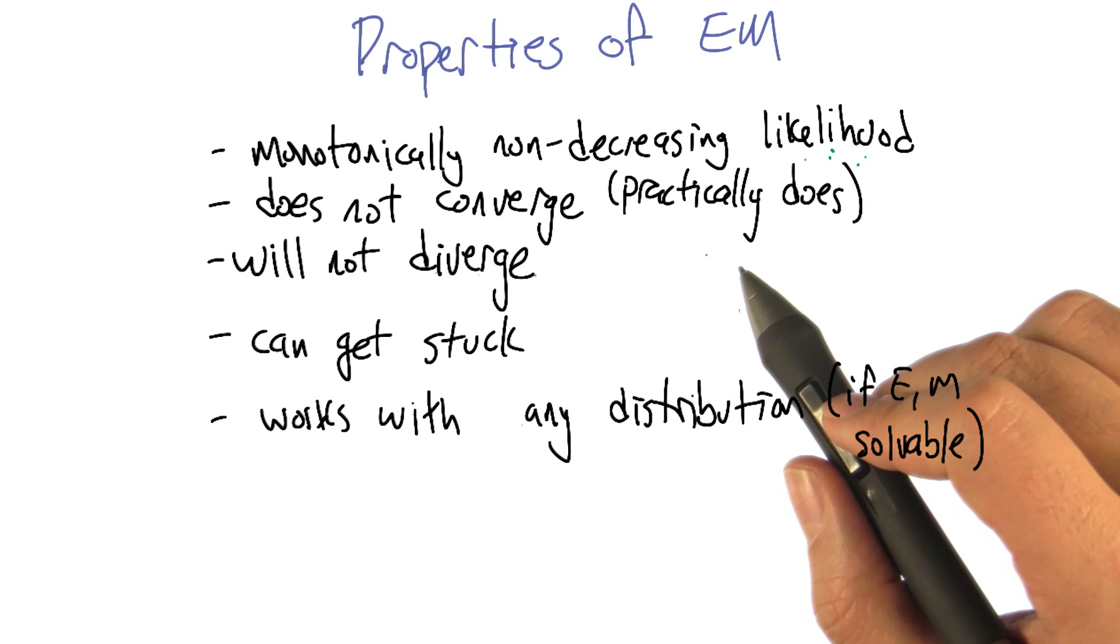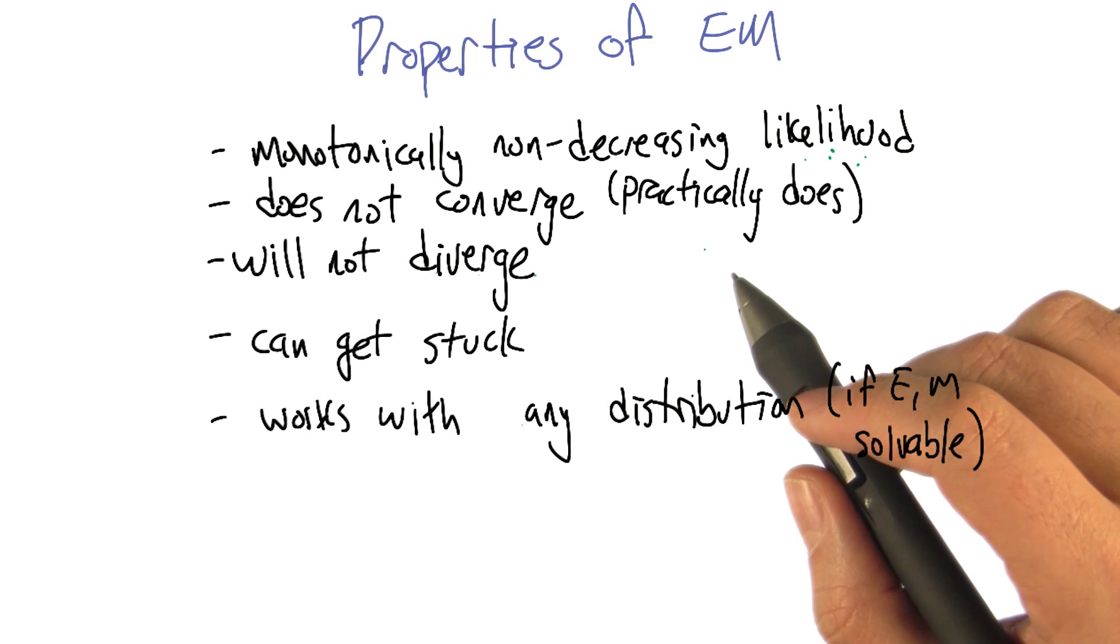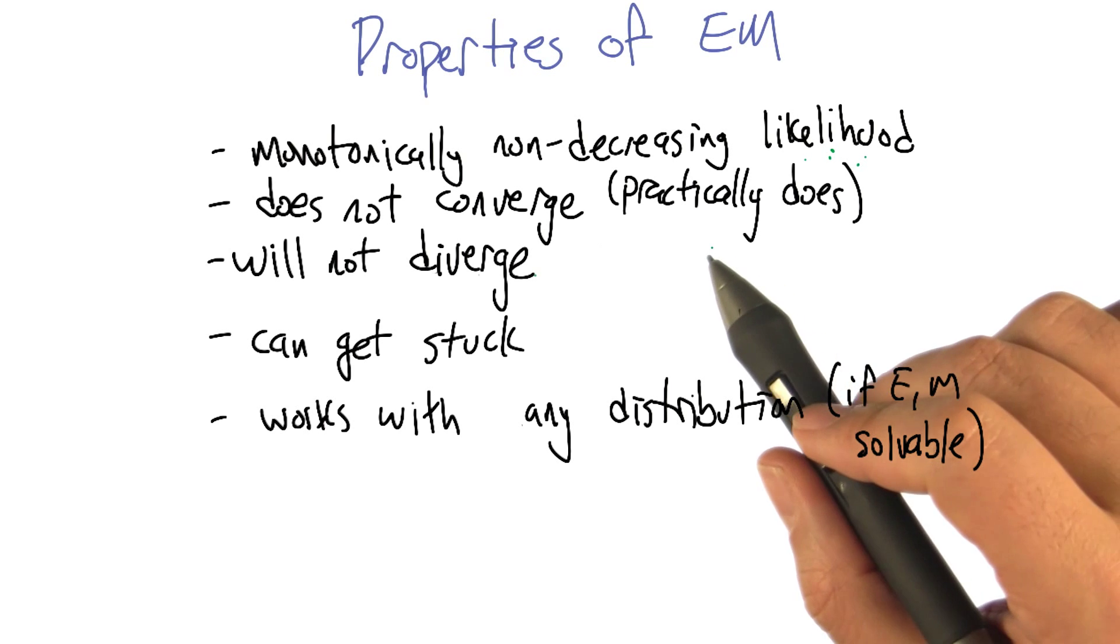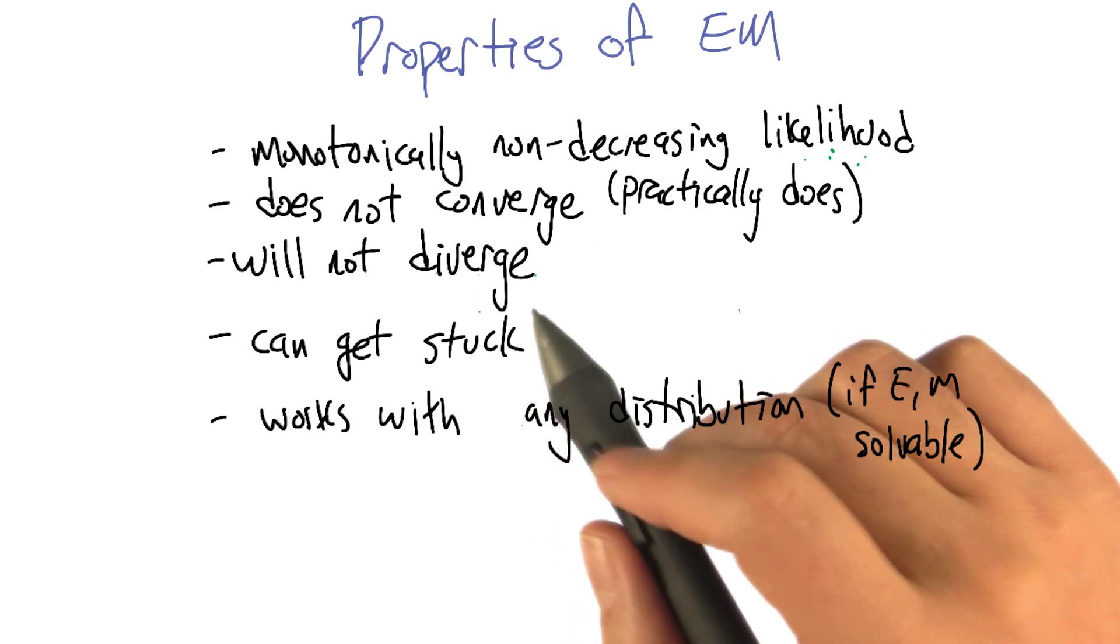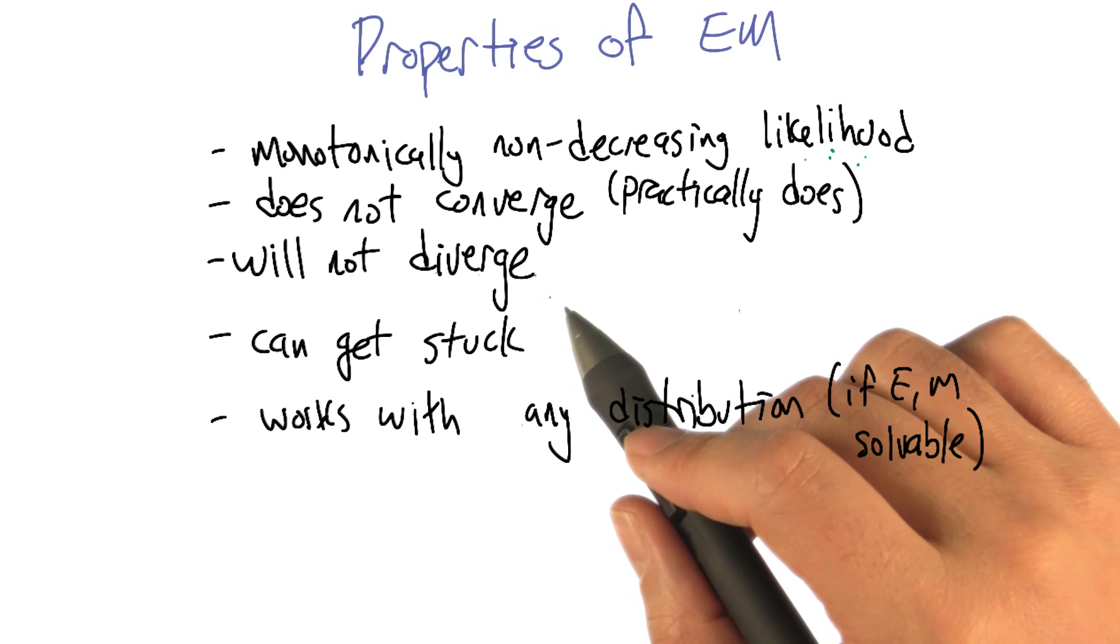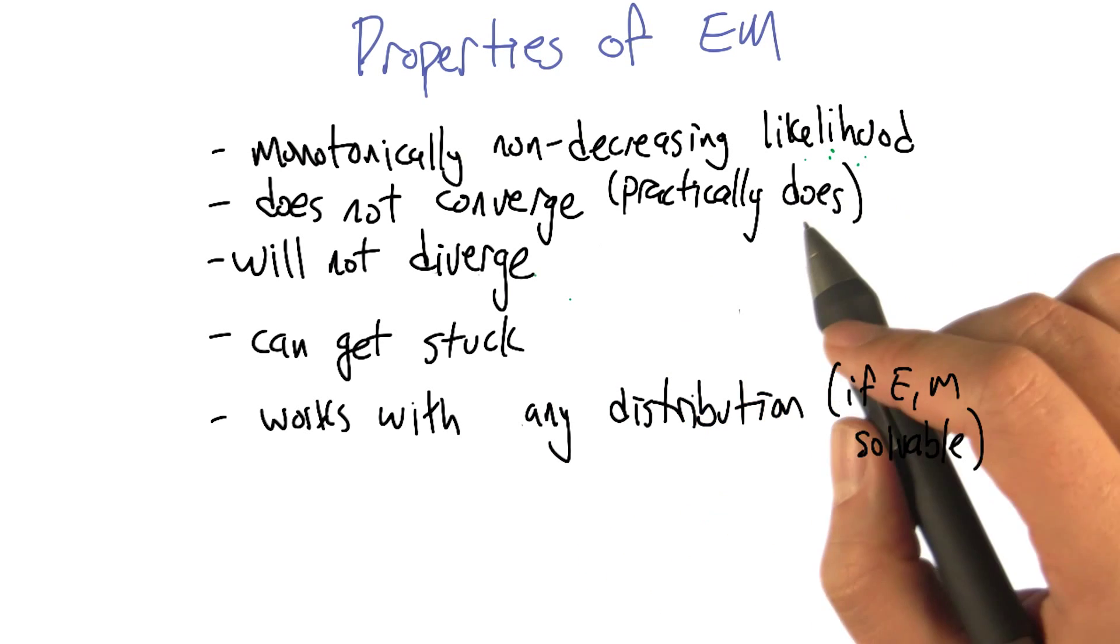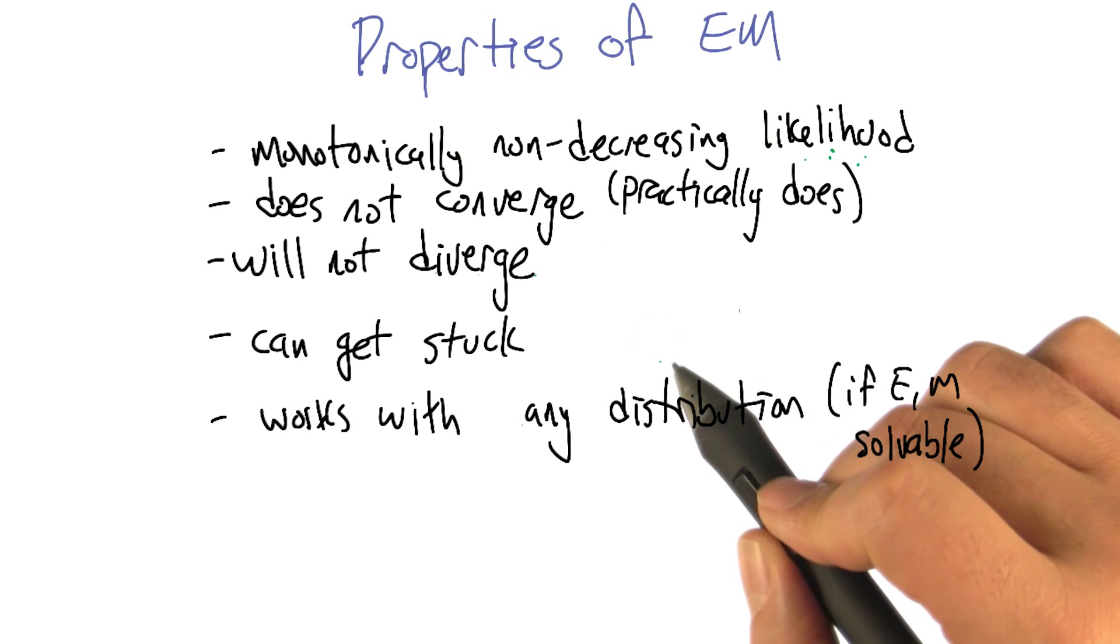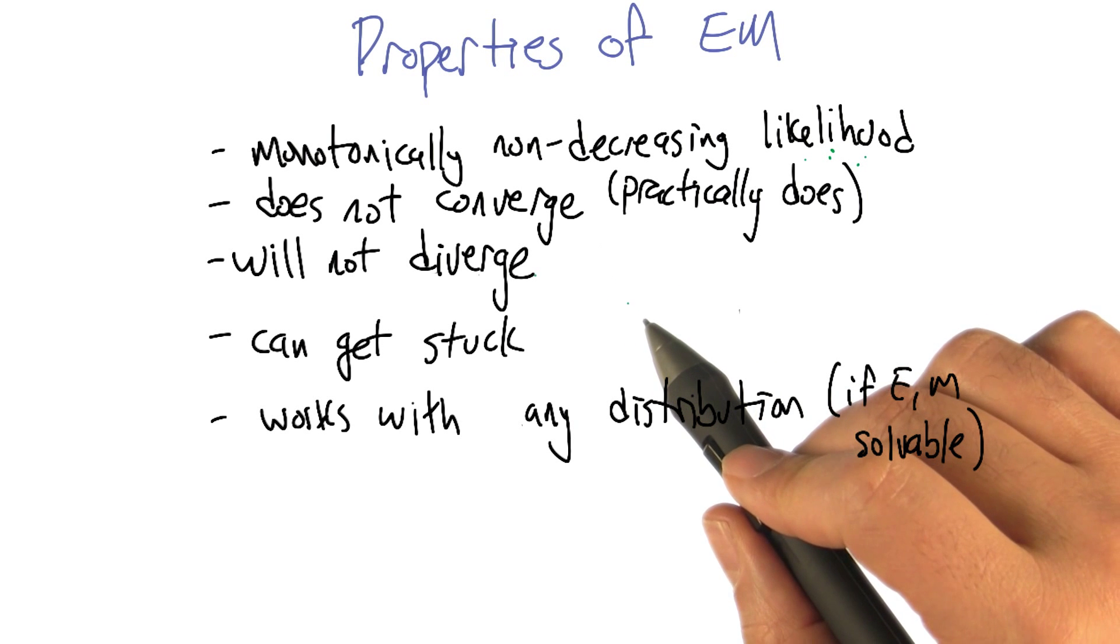So it doesn't have to converge. I think you can construct really strange examples that make it do that. But on the other hand, even though it doesn't converge, it can't diverge. It can't be that these numbers blow up and become infinitely large because it really is working in the space of probabilities. And it's pretty well behaved as far as that's concerned.